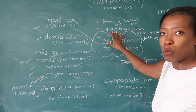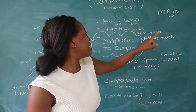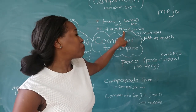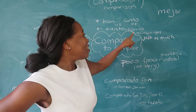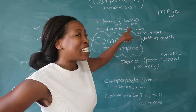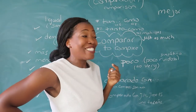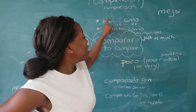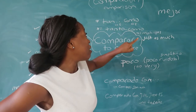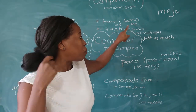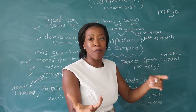With tanto como you can say: tengo tanto pelo como tú — I have just as much hair as you. Tanto como means 'as much as.' You stick a noun in there: tengo tanto dinero como tú — I have as much money as you. So tan como takes an adjective; tanto como takes a noun — tanto pelo, tanta riqueza — just as much of something as somebody else.